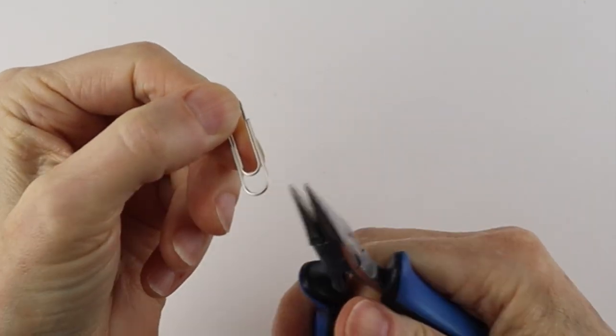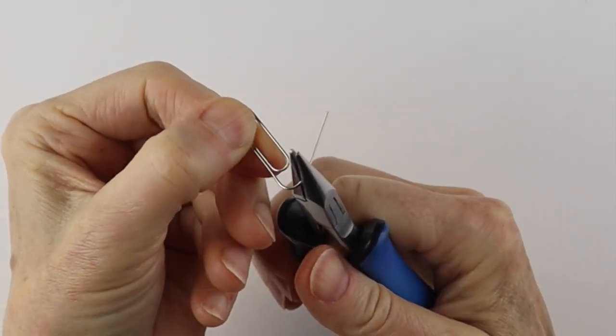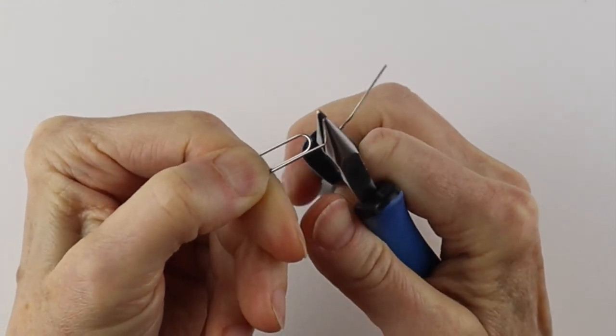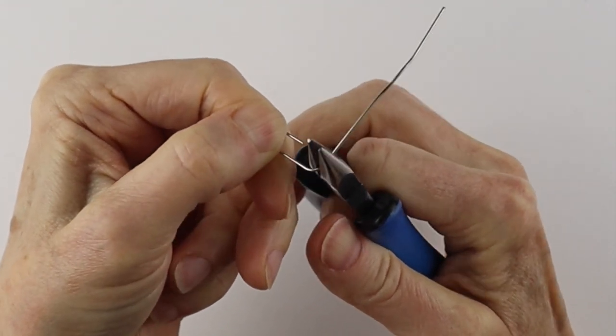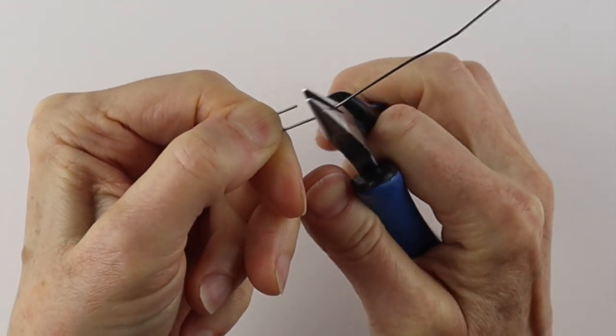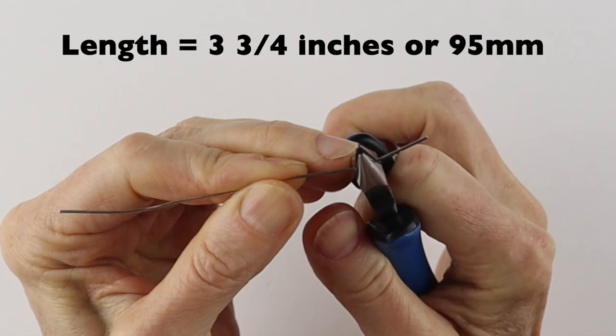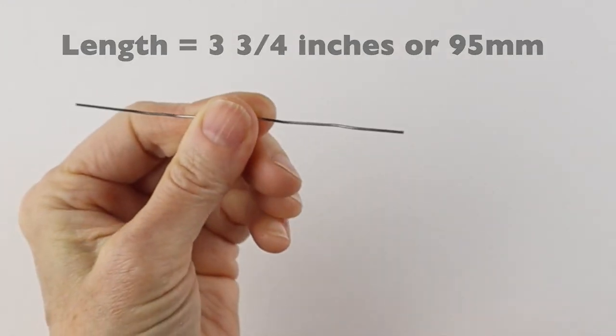We always start with opening up the paperclip with our flat pliers. You can do this by hand, but it's easier to do with the pliers. So just go slowly and pinch it along as you go. You just want to get it as straight as you can.